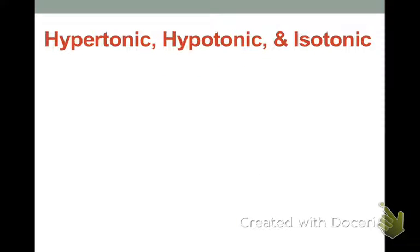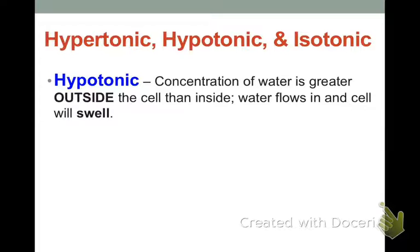So let's talk about osmosis. What is it? Diffusion of water - only water. There are three types of osmotic solutions: hypertonic, hypotonic, or isotonic. Hypotonic solution is where the concentration of water is greater outside than inside the cell. In order to reach equilibrium, the water will flow in the cell, and that cell will swell. A way to remember it: hypo looks like hippo, and hippo is a big animal. So when you put a cell in a hypotonic solution, that cell will swell like a hippo.